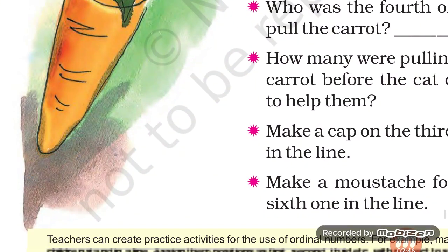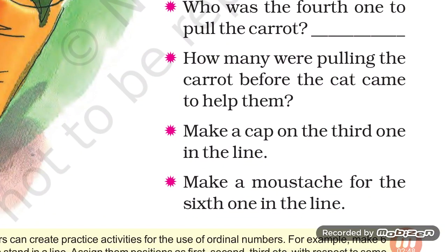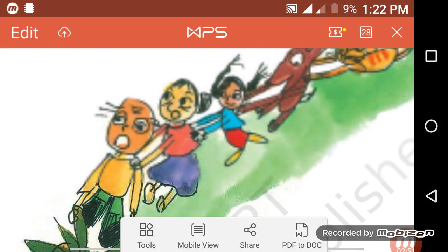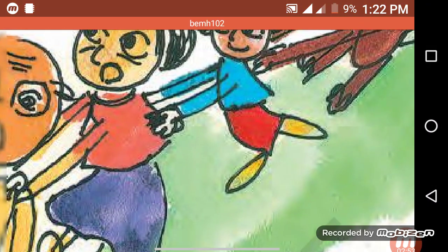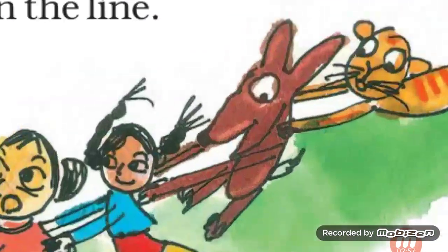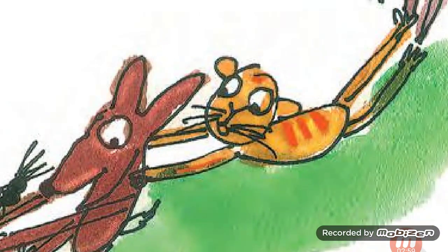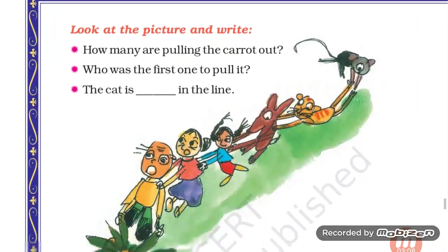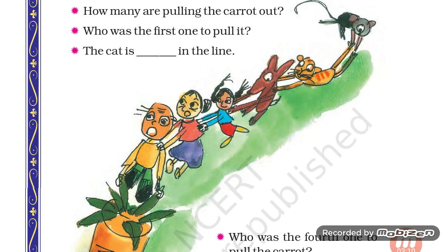Next question: Make a mustache for the sixth one in the line. Who is the sixth one in the line? Let's count — first, second, third, fourth, fifth, and this is the sixth — the mouse. The mouse is the sixth one in the line, and it's the last one. You will draw a mustache. Mustache means mujhe.